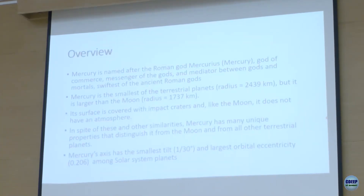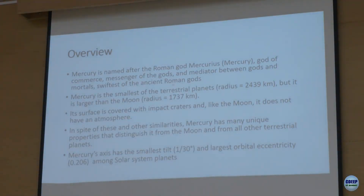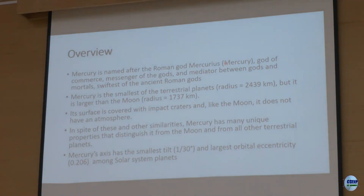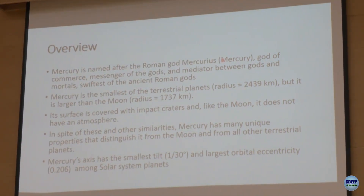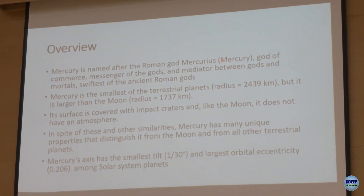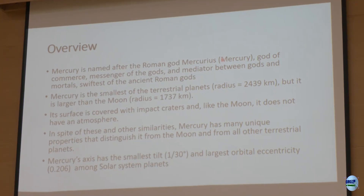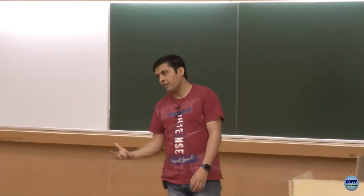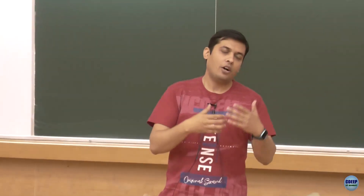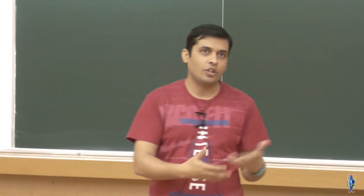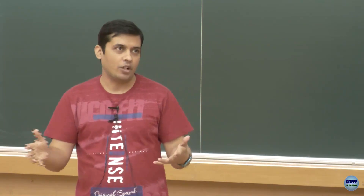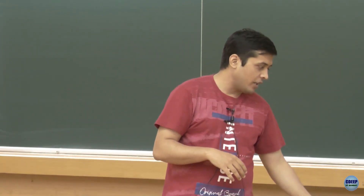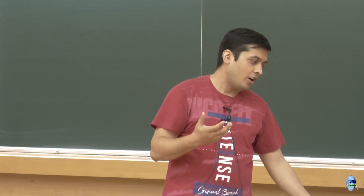Starting with an overview: Mercury was named after the Roman god Mercurius. All planets are named after gods in some mythology — in Hindu culture Mercury is called Buddh, one of the gods in Hindu mythology. Many planets were named after Roman or Greek gods because that's when planetary research was very active. Other mythologies have their own names.